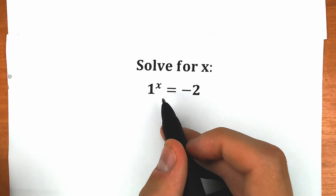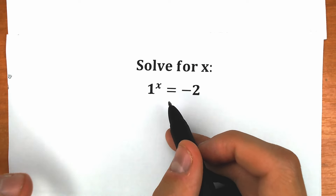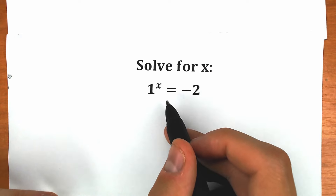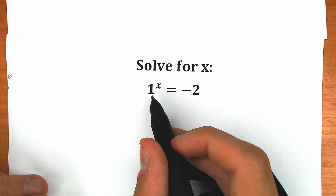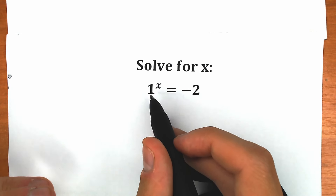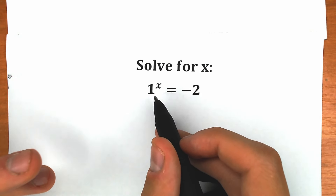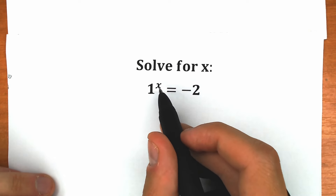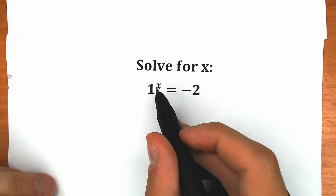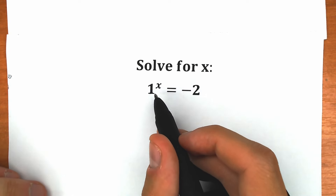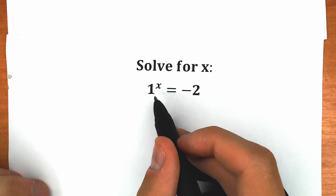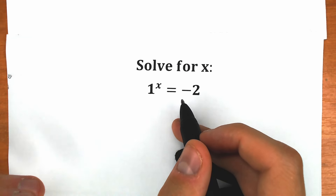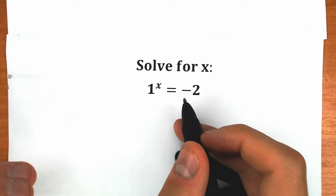On the first side, a lot of students might be saying this is a very easy question — we have an exponential equation. But when they look closer, 1 to the x is always equal to 1, because whether x equals 100, 1000, it doesn't matter — 1 to any power is always 1. And 1 is not equal to minus 2, so it turns into a big argument.